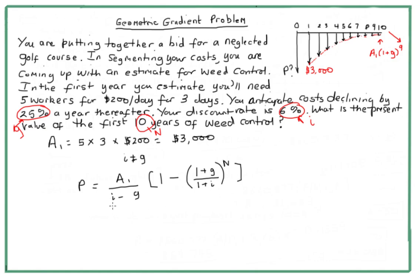This is why I wanted to do a negative g — it's important to note that g is a negative number. So i is 0.06 and g is minus 0.25. In the denominator, i minus g becomes a minus times a minus, which is a plus: 0.06 plus 0.25 gives us 0.31. Sometimes people get a little put off by this, so it's worth highlighting.